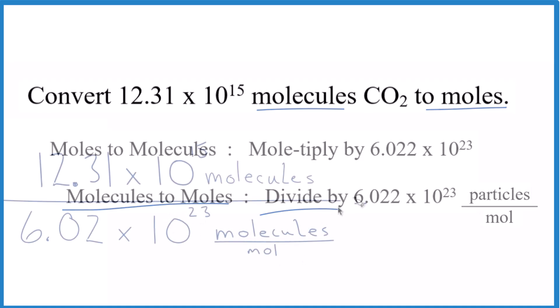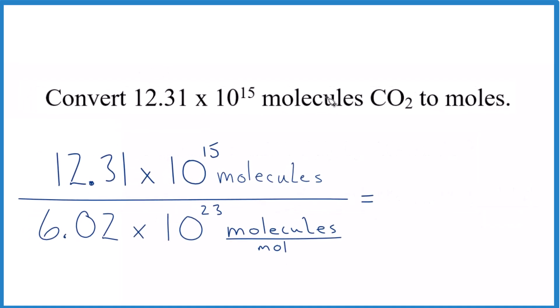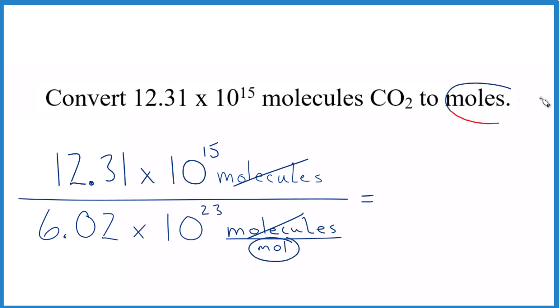Let's do that. We have our number from the problem and Avogadro's number. You can see we have molecules on top and on the bottom, so they cancel out. We're left with moles, and that makes sense — we're looking to find moles in this problem.